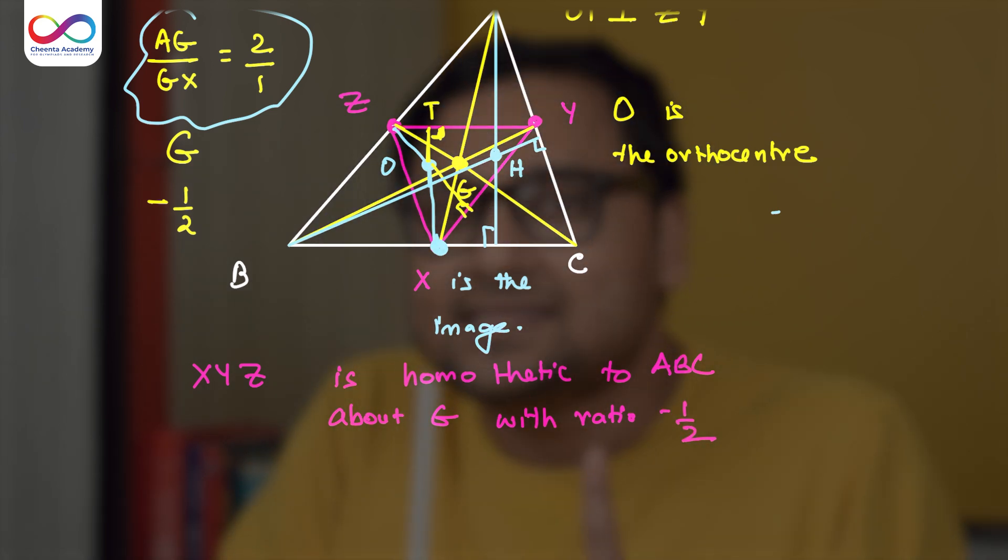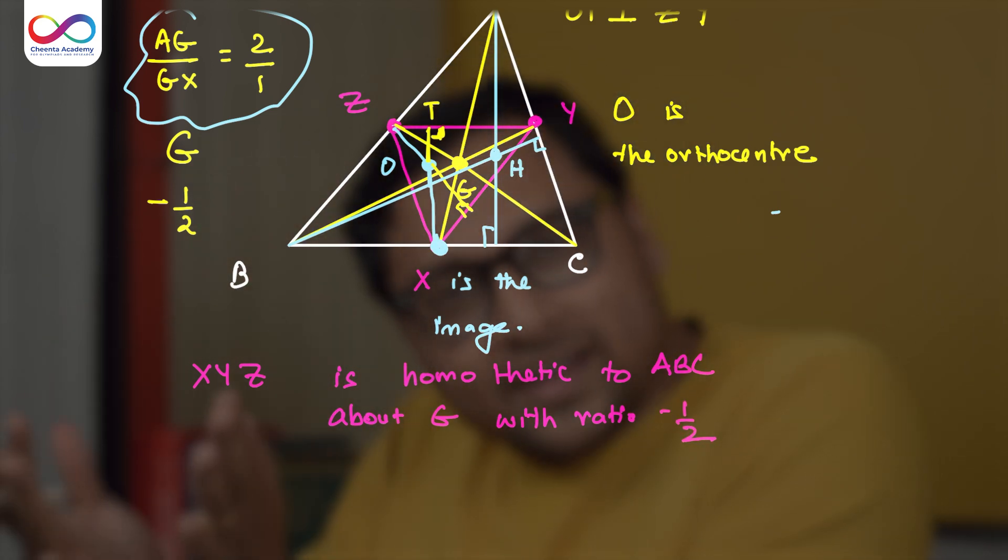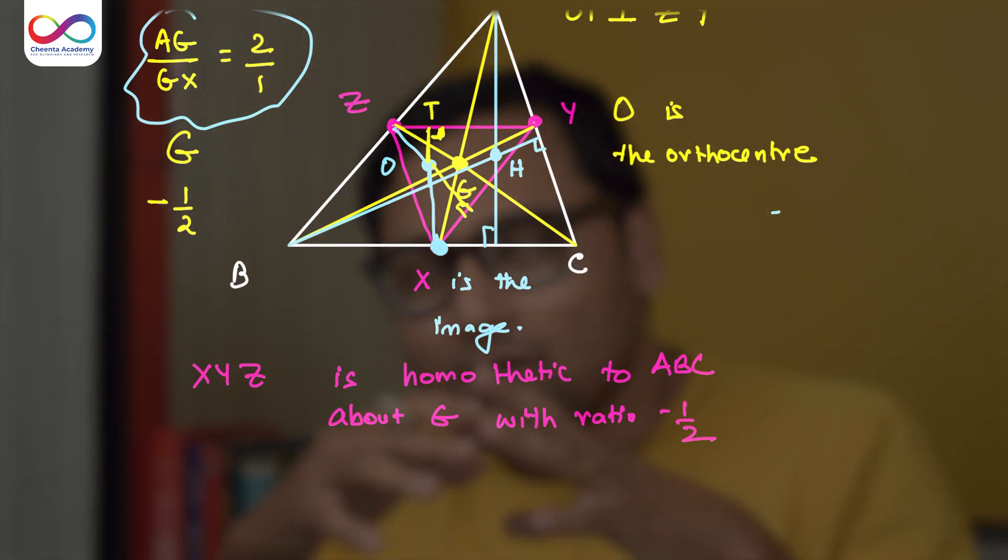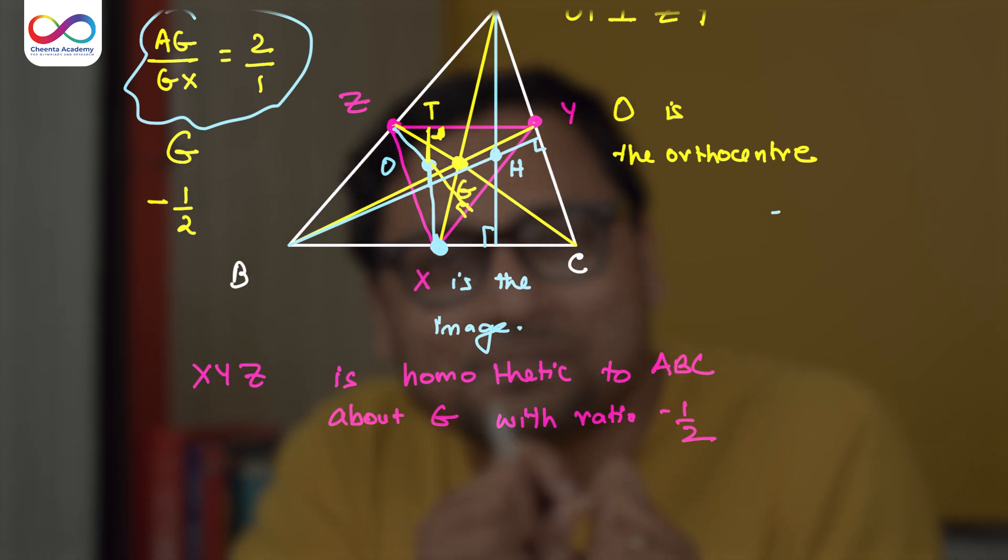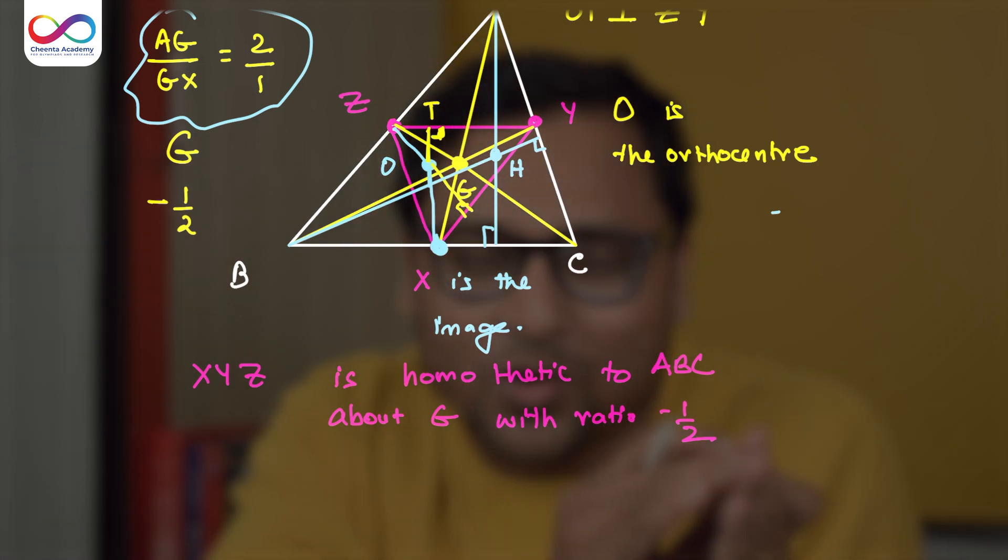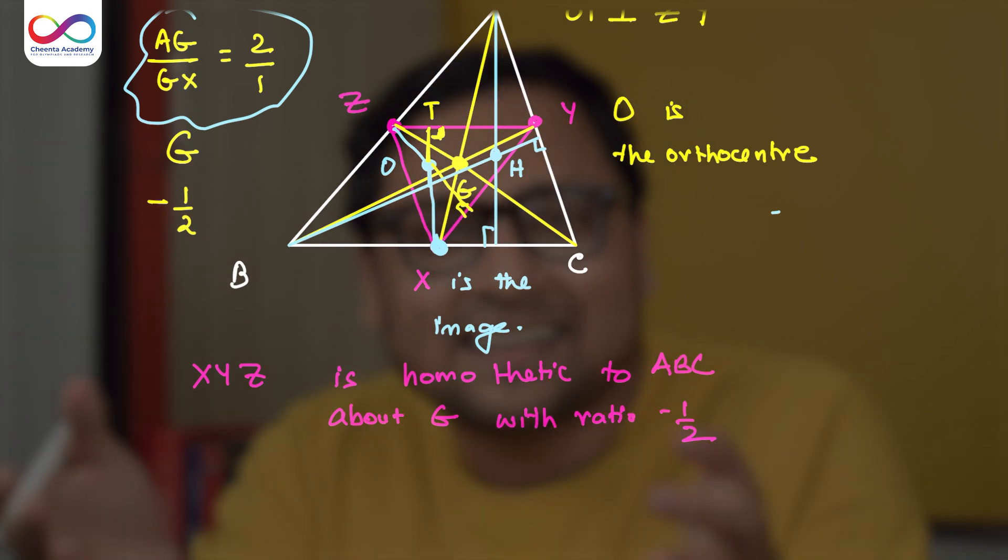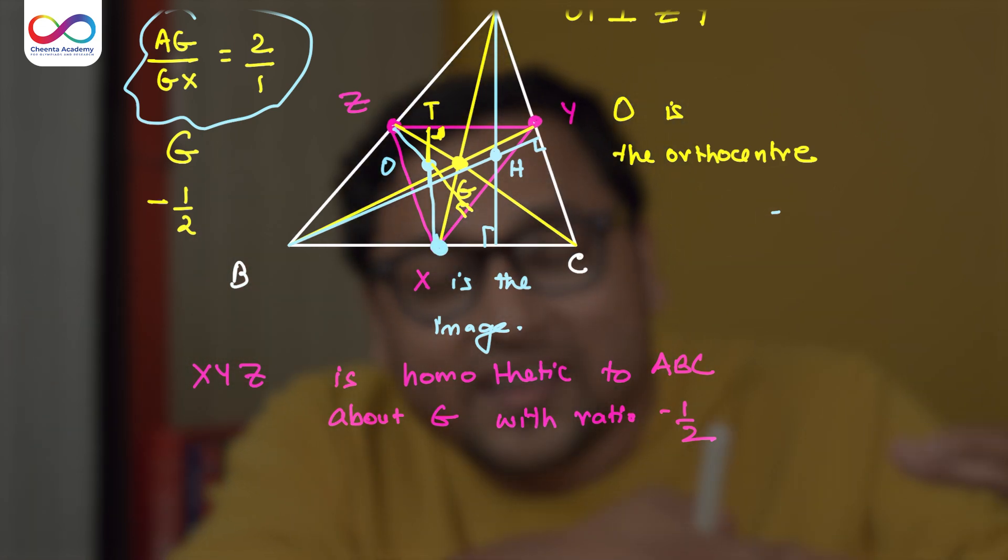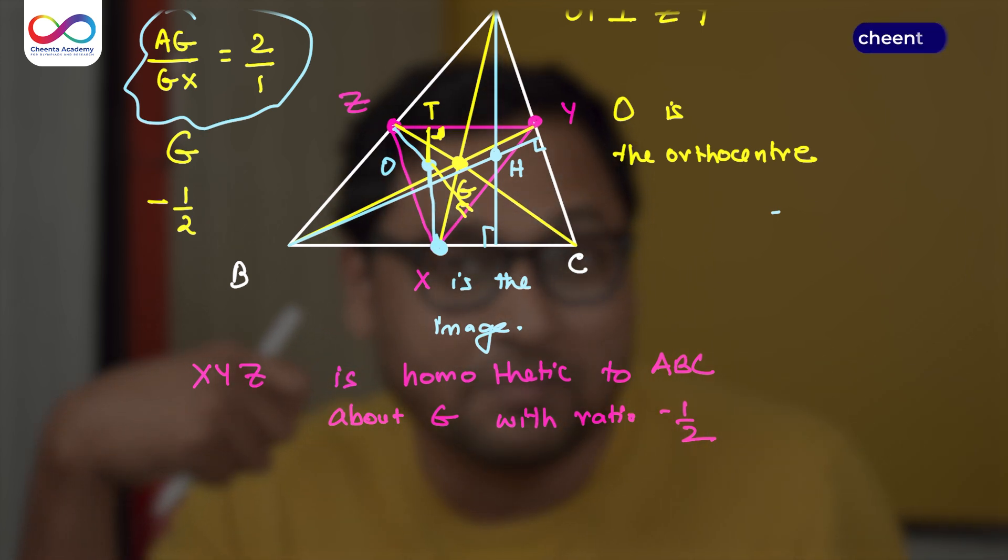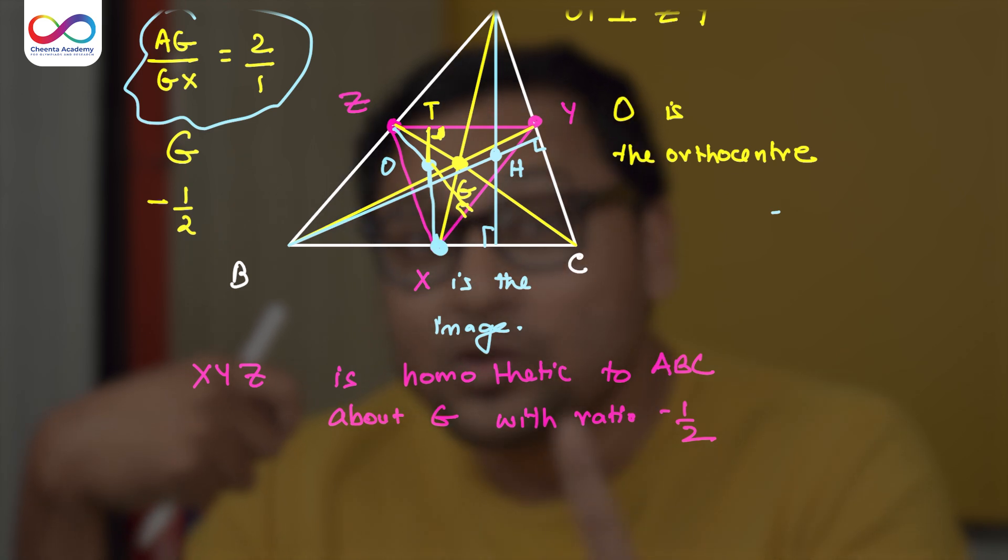That means all the points of the main triangle, all the important points of the main triangle will have images under this map, under this transformation. So orthocenter will go to orthocenter, circumcenter will go to circumcenter. So all the important points of ABC will also move inside XYZ, the medial triangle, under this transformation.